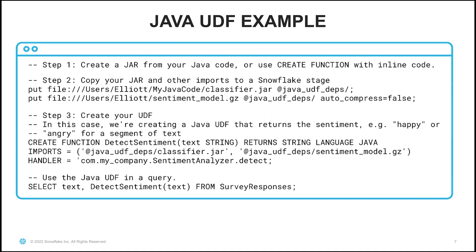When you want to create a Java UDF, you'll create a jar from your Java code, or you can use a CREATE FUNCTION statement with inline code if it's simple. Once you've created your jar, you can copy it and other imports to a Snowflake stage using PUT commands from SnowSQL. Once those files are copied, you can create your UDF. In this case, we're creating a Java UDF that returns the sentiment — such as happy or angry — for a segment of text. We specify CREATE FUNCTION, then the function name, detect_sentiment. The input is text, which is a string, and we're returning a string as output.